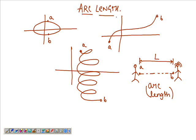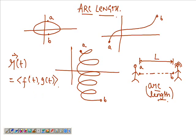Let me see how we can actually derive the arc length. Let's say we have this function — I'll call it R(t), a vector function — and we'll start with a two-dimensional function. Let's say that we move a certain distance on the curve in a time interval dt, a small time interval. The new position vector would be R(t + dt).